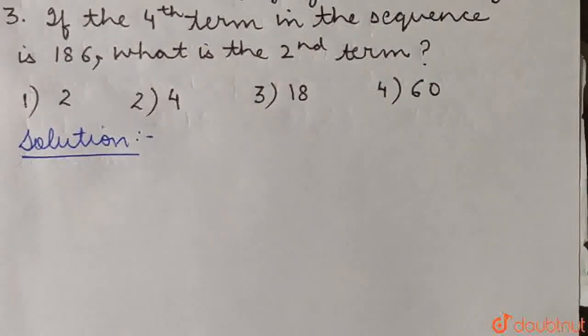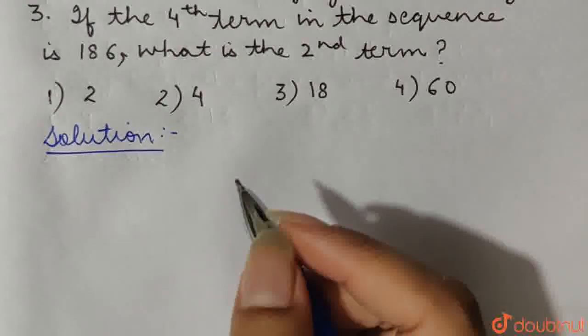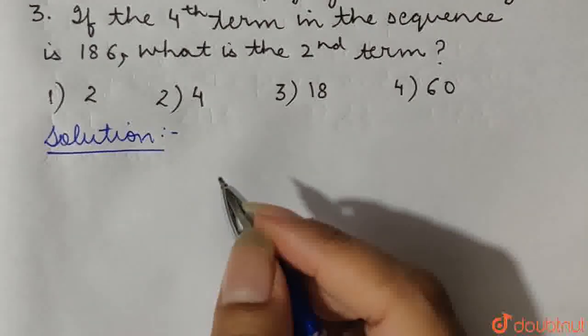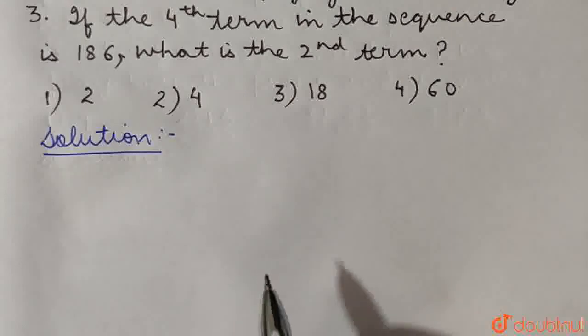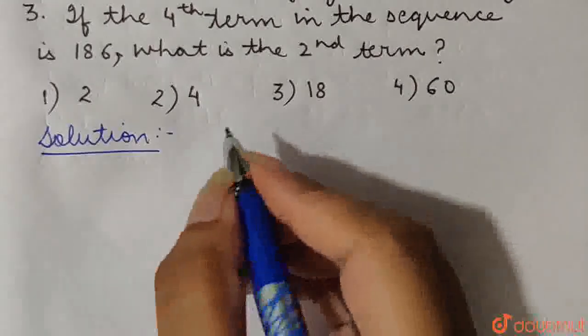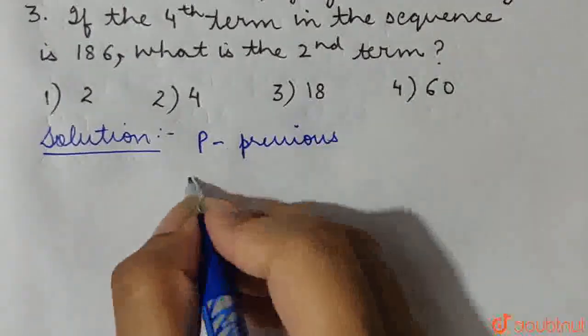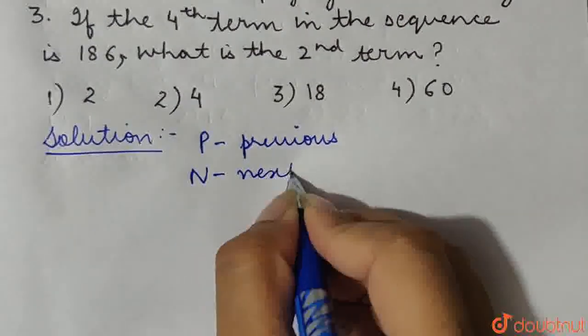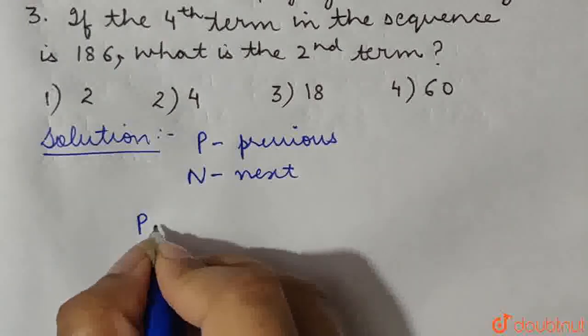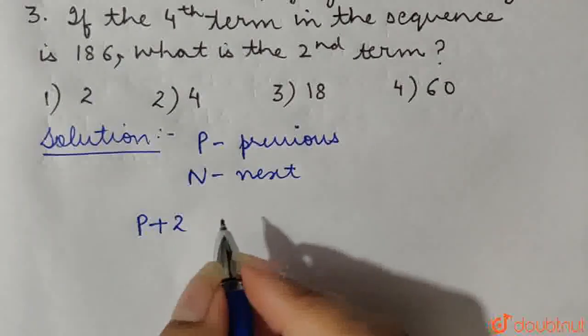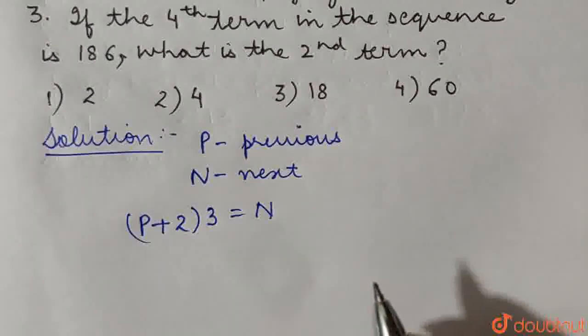So we have been given a sequence of numbers such that the term after the first term would be obtained by adding 2 to the previous number and then multiplying it by 3. That means if p denotes the previous value and n denotes the next value of a sequence, then previous value, in the previous value when we add 2 and then multiply the sum by 3, we obtain the next value of the sequence.